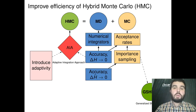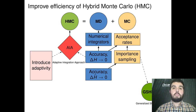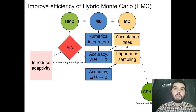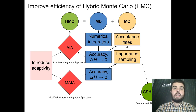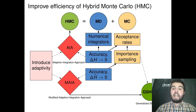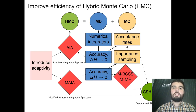Then we have worked in the improvement of accuracy and conservation of the modified or shadow Hamiltonian. We have derived a new adaptive method that we call the Modified Adaptive Integration Approach, and also we have derived new integrators for sampling with respect to modified or shadow Hamiltonians.